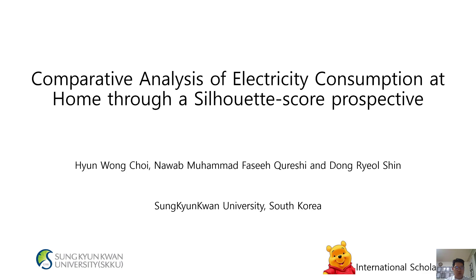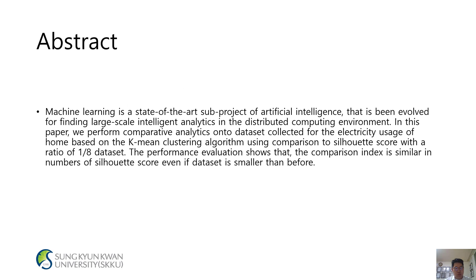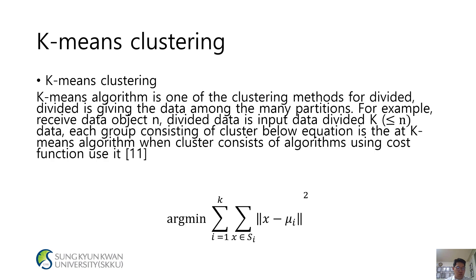Comparative analytics of electric consumption at home through a silhouette score perspective. Machine learning is a state-of-the-art subfield of artificial intelligence evolved for finding large-scale intelligent analytics in the distributed computing environment. In this paper, we perform comparative analytics on datasets collected for the electricity usage of home based on the K-means clustering algorithm, using comparison to silhouette score with the ratio of the A/1 dataset. The performance evaluation shows that the comparison index is similar in number of silhouette score even if the dataset is smaller than before. K-means algorithm is one of the clustering methods for partitioning data among many partitions.